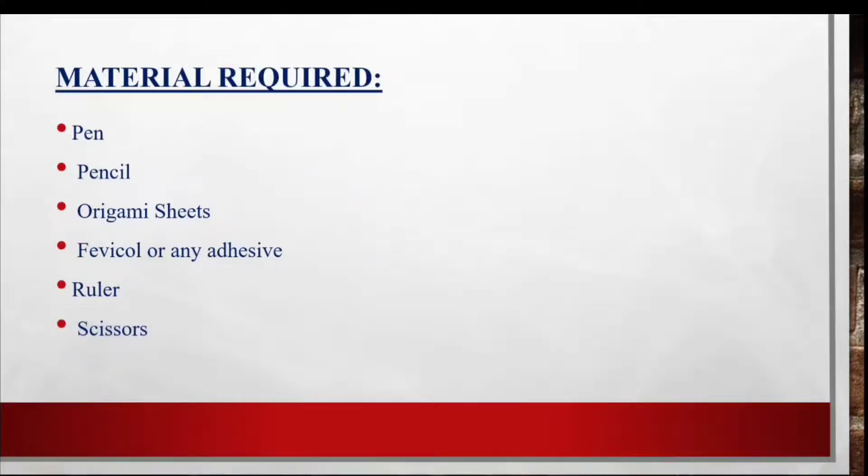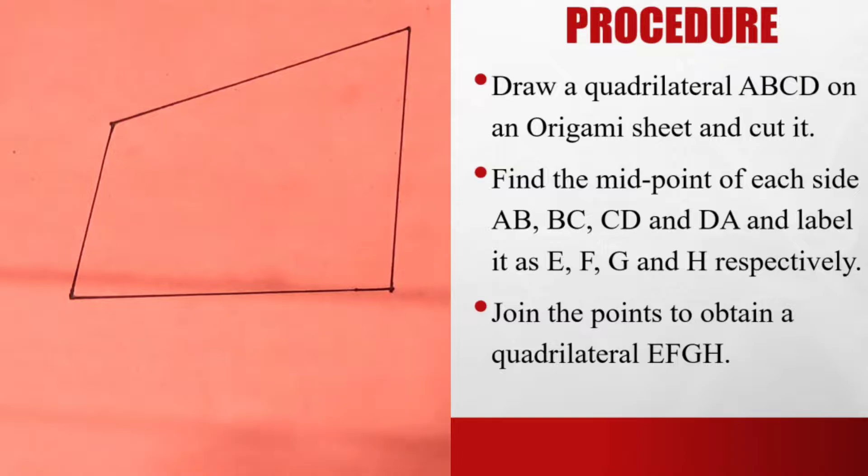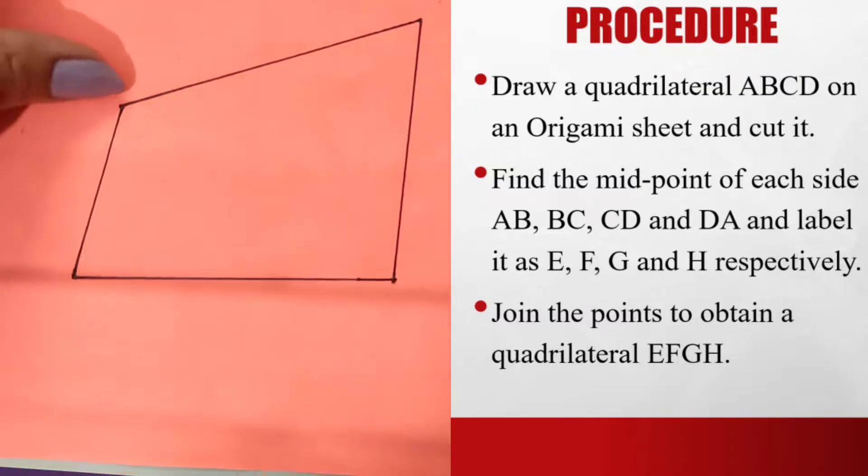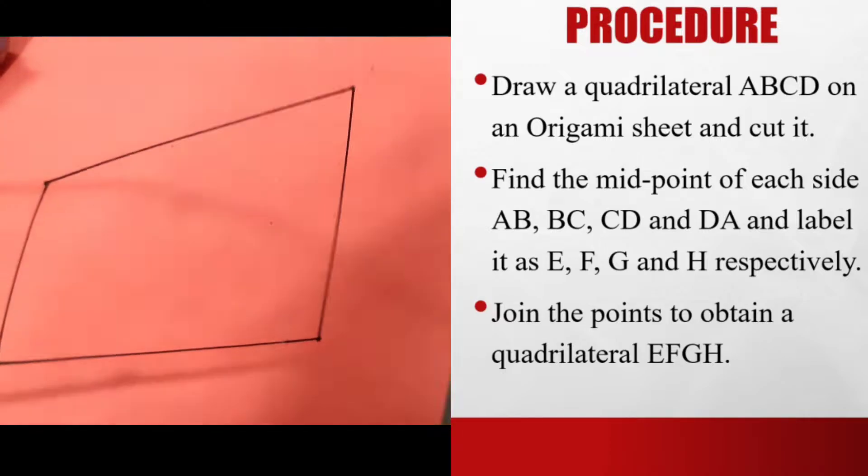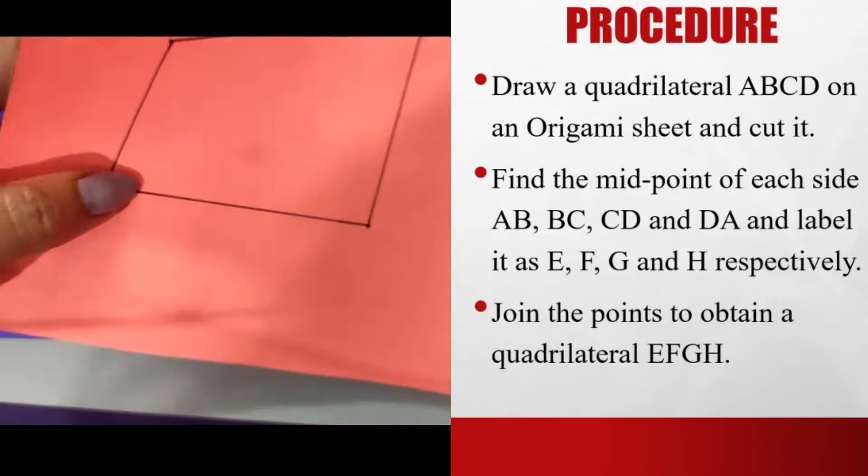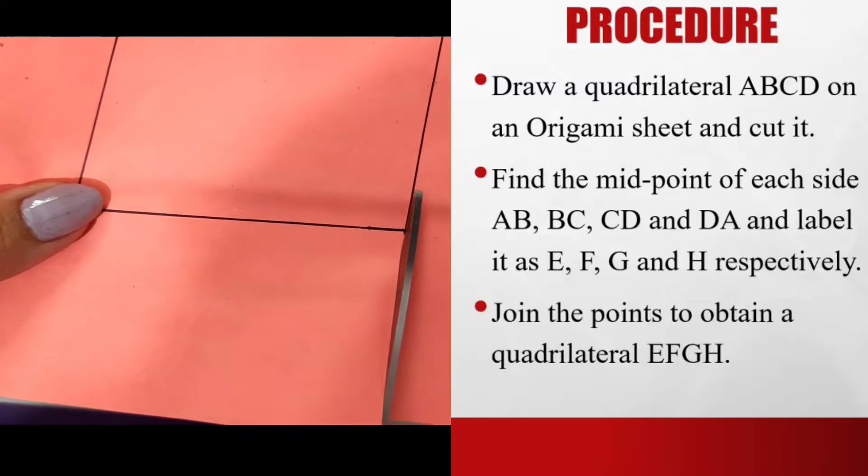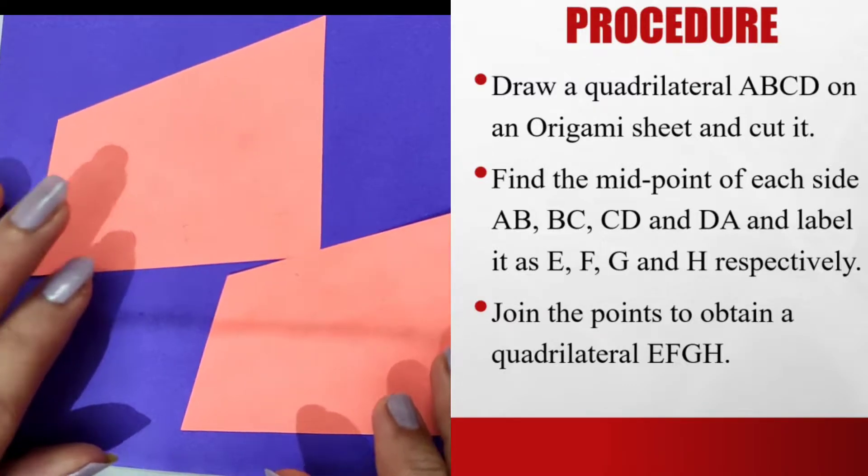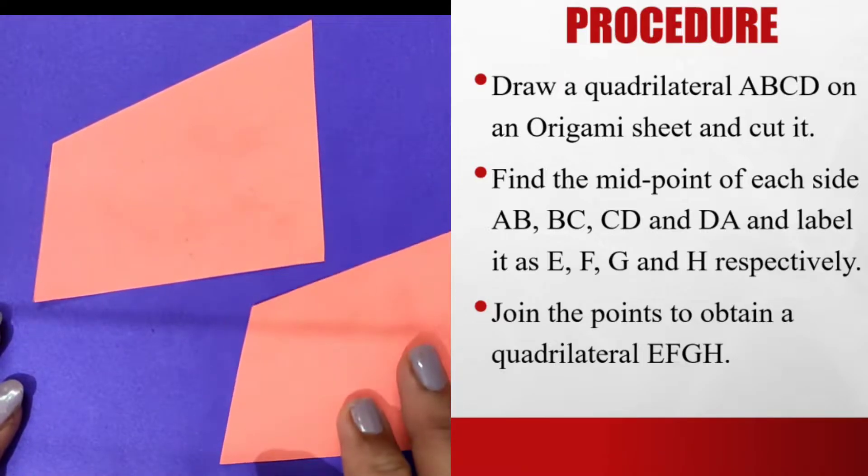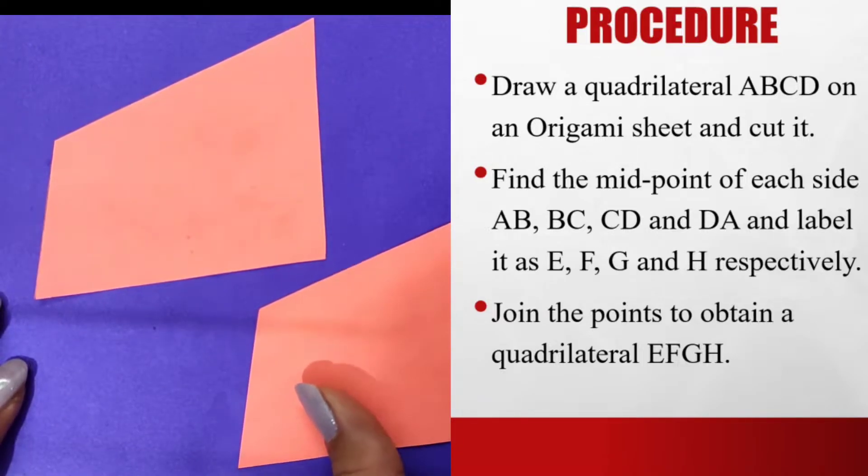Let me demonstrate the procedure to you now. I have drawn any irregular quadrilateral, just a four-sided figure, and I cut it out. I will draw two of them. Let me cut them out.